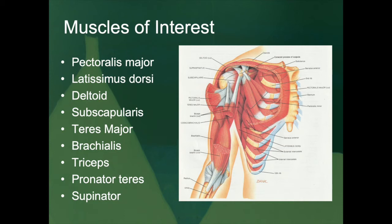Another scapular muscle important for understanding the biomechanics of this area is the subscapularis. Its origin is the subscapular fossa of the scapula. In terms of its connection with the humerus, the insertion occurs at the lesser tubercle of the humerus. The subscapularis aids other muscles in rotating the arm — specifically the rotation of the arm in a medial fashion.